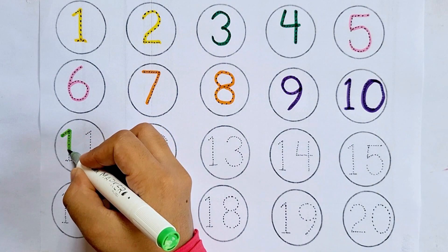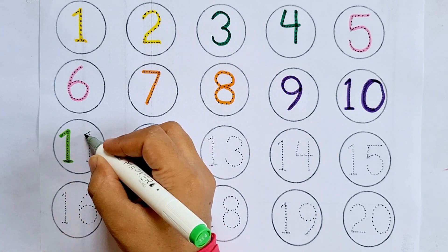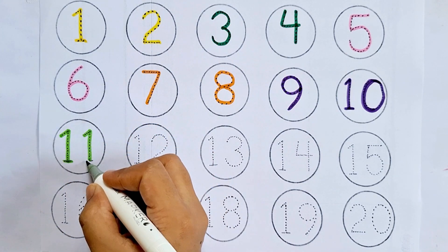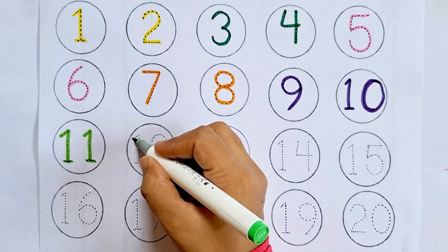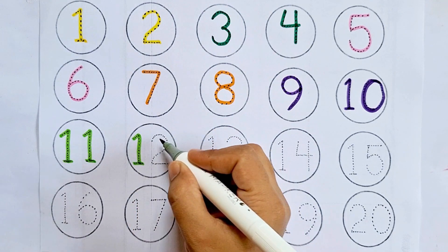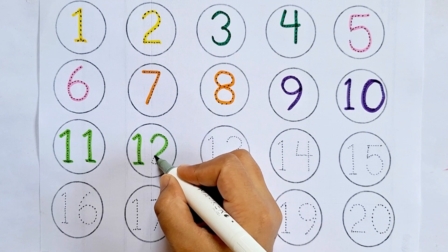Eleven, this is eleven. One, one, eleven. Twelve, this is twelve. One, two, twelve.